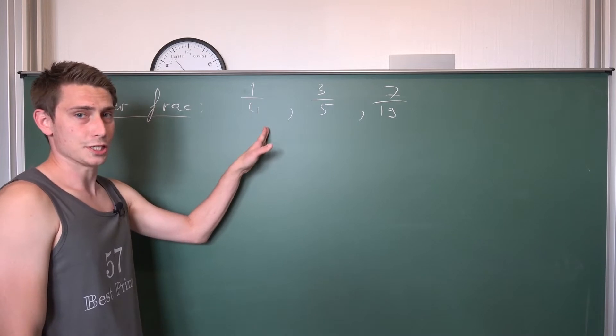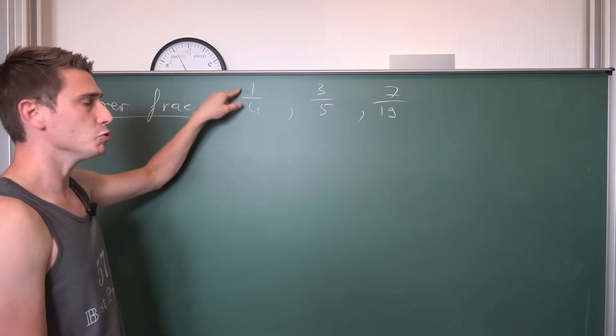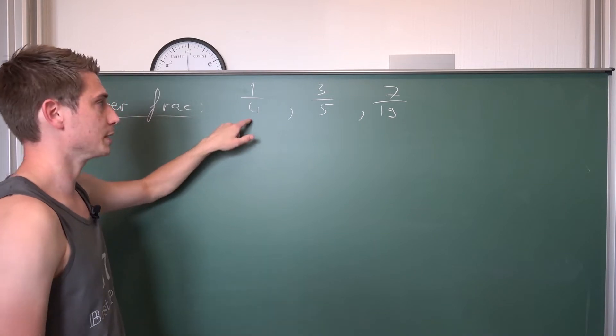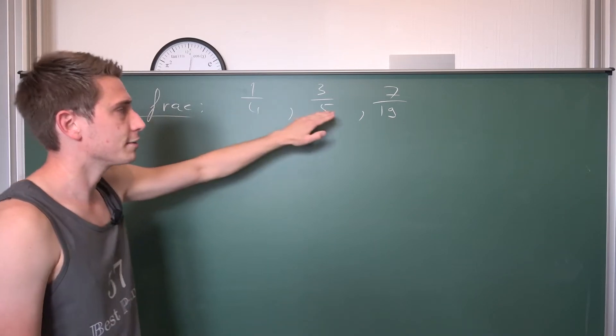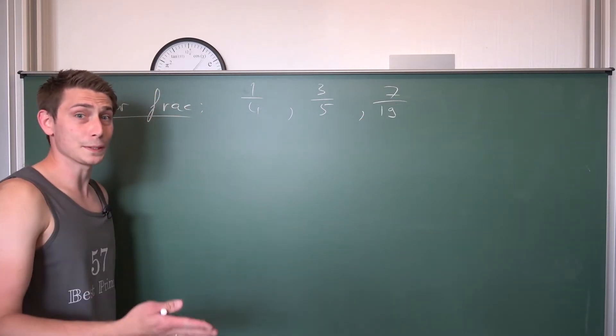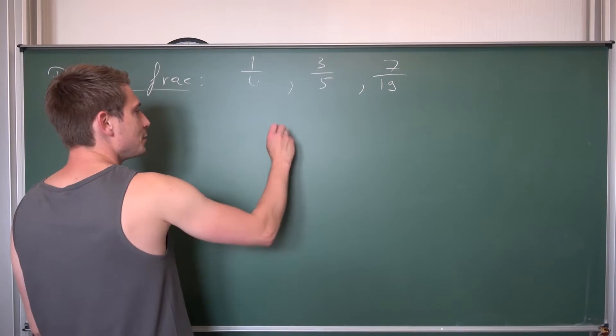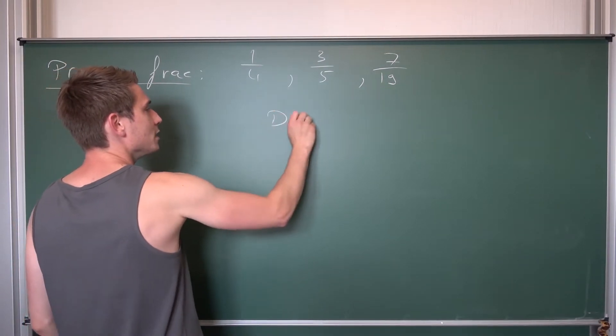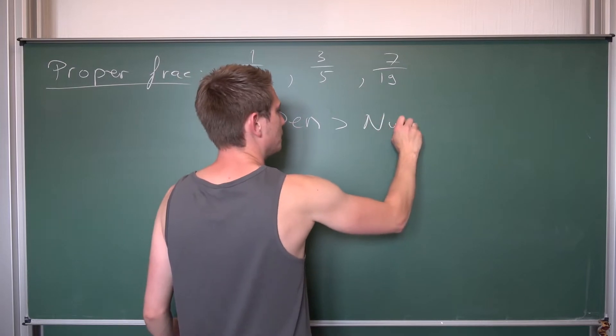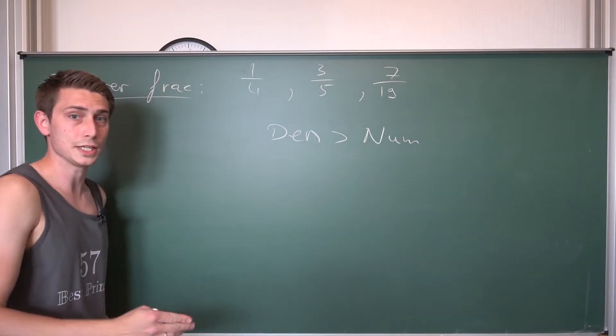A proper fraction is defined as a fraction where the numerator is less than our denominator. I hope you agree with me that 4 is greater than 1, that 5 is greater than 3, that 19 is greater than 7. So this is the main property of a proper fraction, namely that the denominator is strictly greater than our numerator. This is the only thing you really need to know.